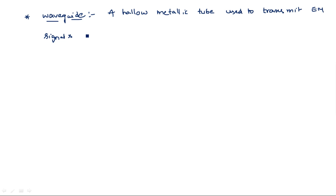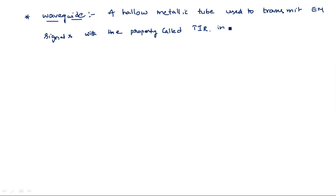This hollow metallic tube is used to transmit the electromagnetic signal with the property called total internal reflection. Because the inner walls are coated with aluminum or any type of good conductor, whatever electromagnetic signal falls on them is immediately reflected back. Because of these number of reflections, the signal is transmitted inside the waveguide. So a waveguide is a hollow metallic tube used to transmit electromagnetic signals with the property called internal reflection.